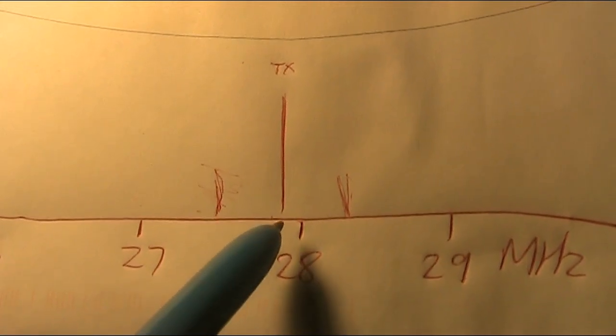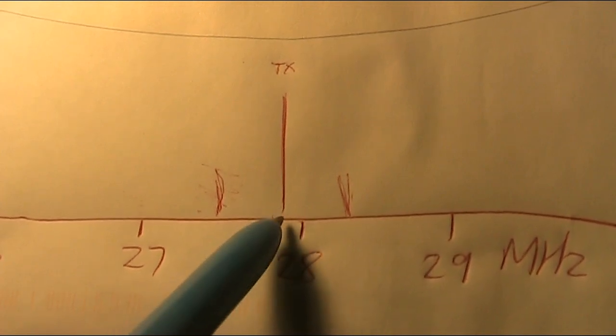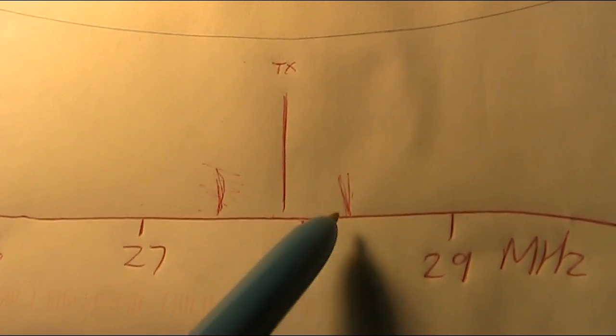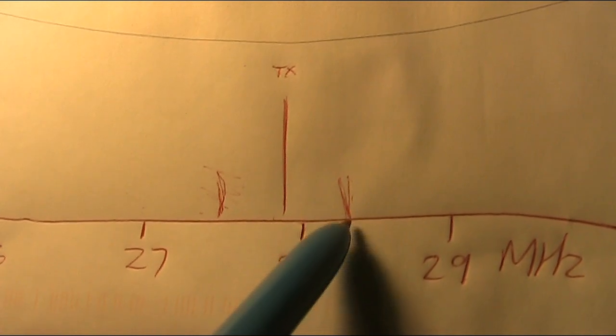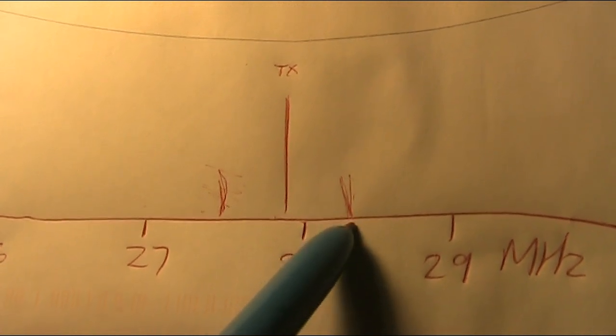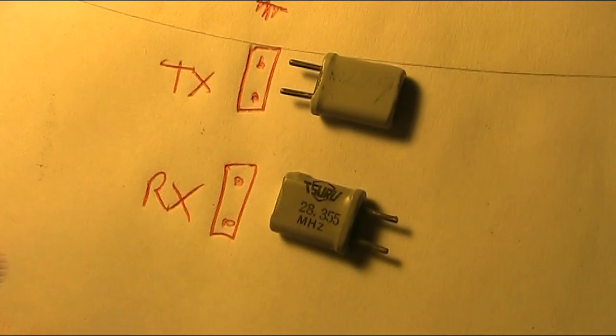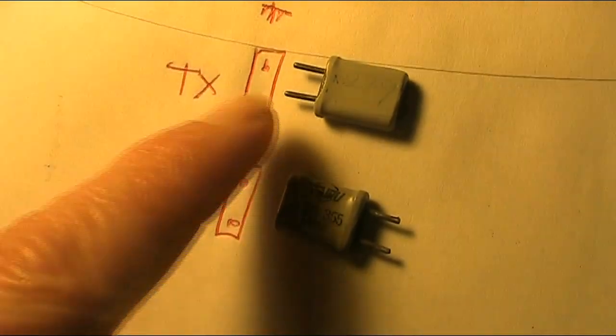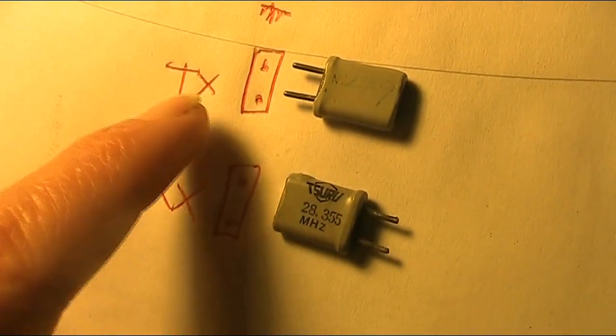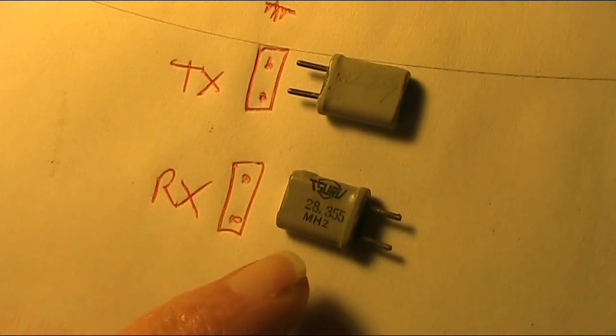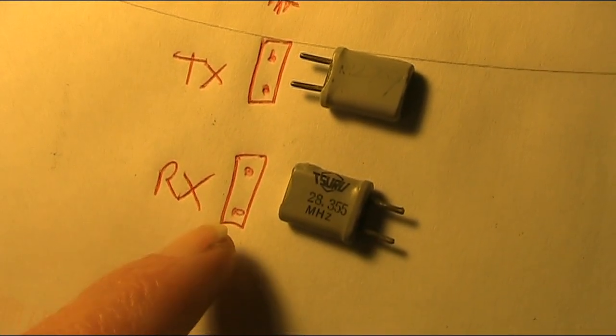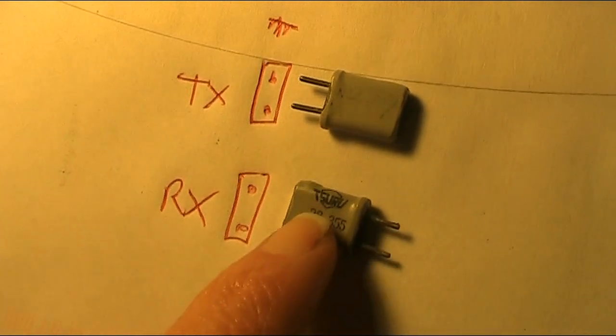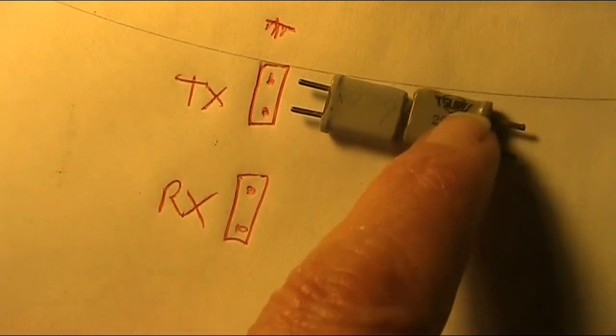At the moment, you've got the 27.880 MHz crystal in the transmit socket and the 28.3 something MHz crystal in the receive socket. Here's a better view. 27.9 MHz crystal in the transmit socket and 28.355 in the receive socket. Now, what happens if you switch them over?